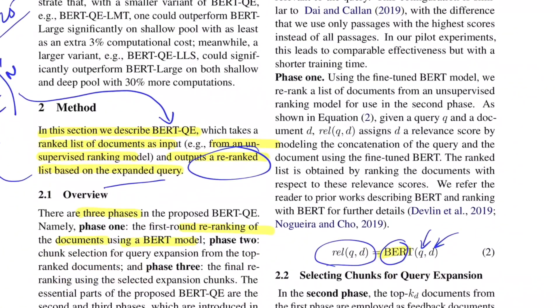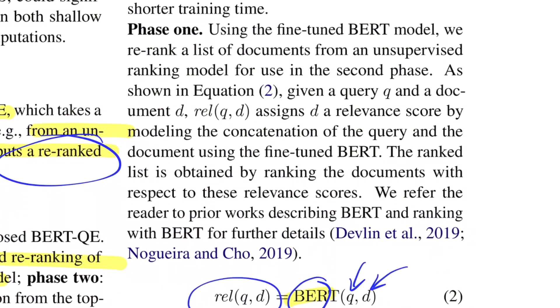Once training is done, it's similar to BERT's original NSP objective where you stuff in two sentences and the model says whether they follow each other, utilizing the CLS vector for prediction. Similarly here, you concatenate Q and document D and find a relevancy score.